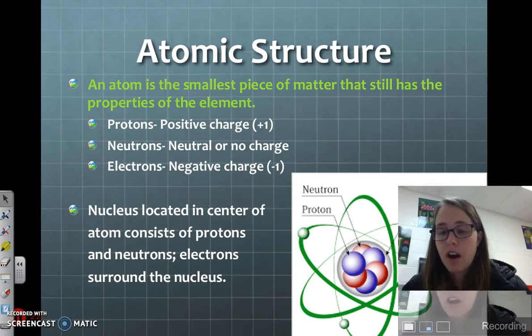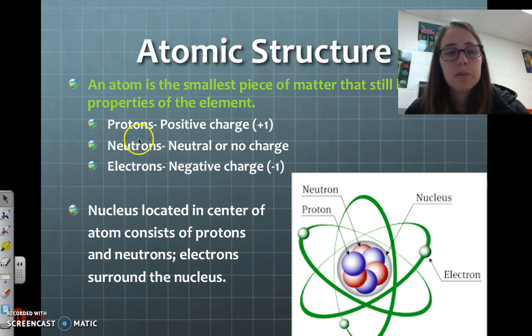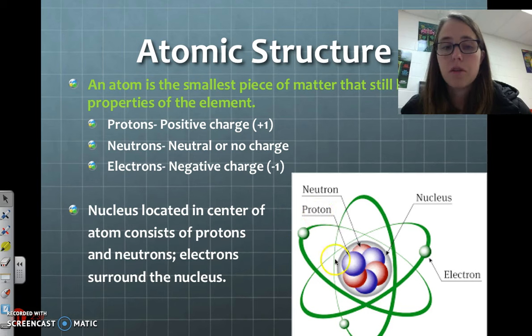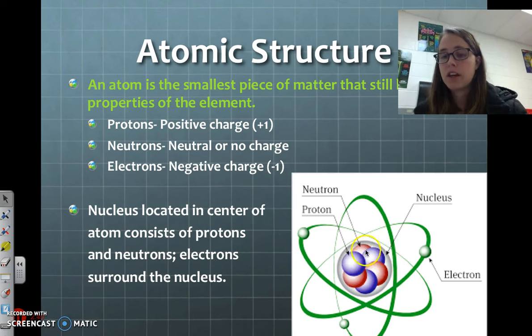In the structure of an atom, there are three main pieces. There are protons, which are positively charged, and protons are in the nucleus. The nucleus is the center of the atom. There are neutrons, which are neutral or have no charge, and those are also located in the nucleus.